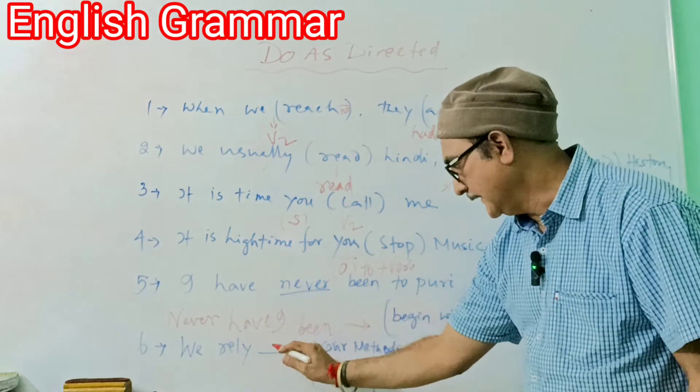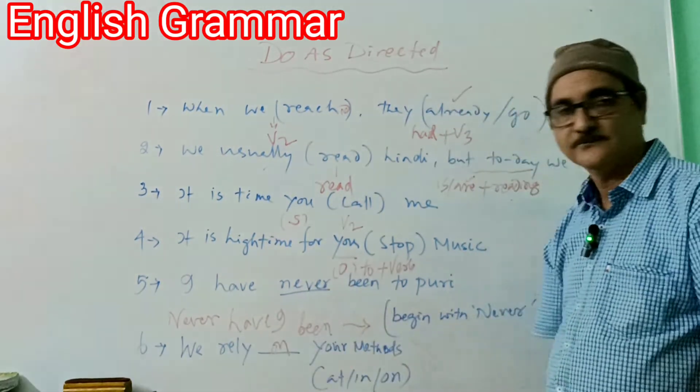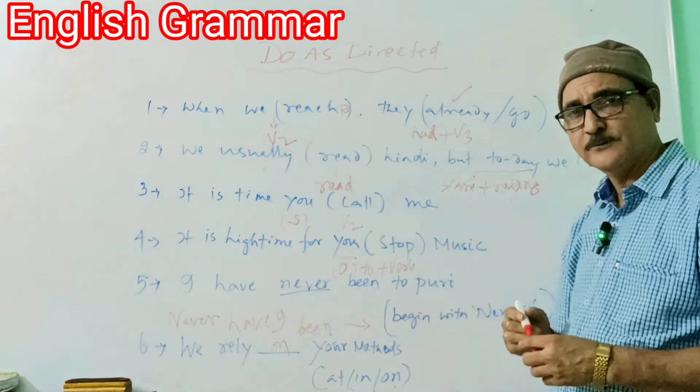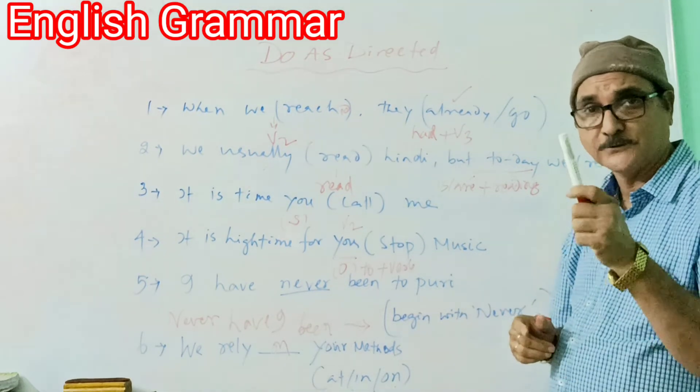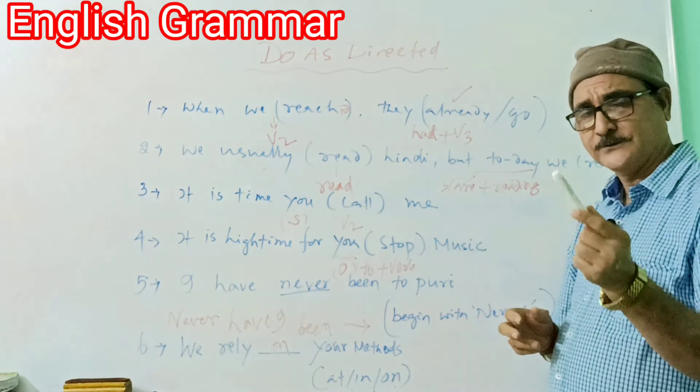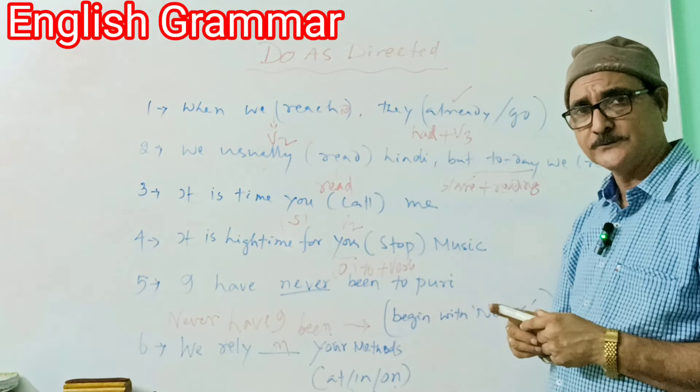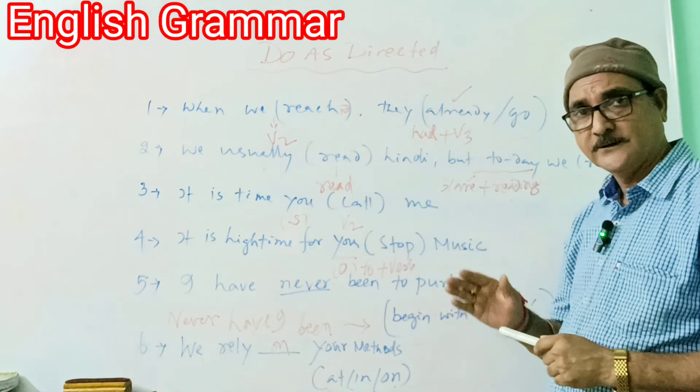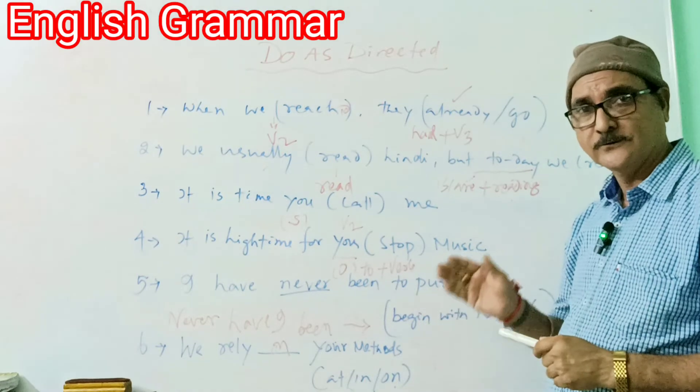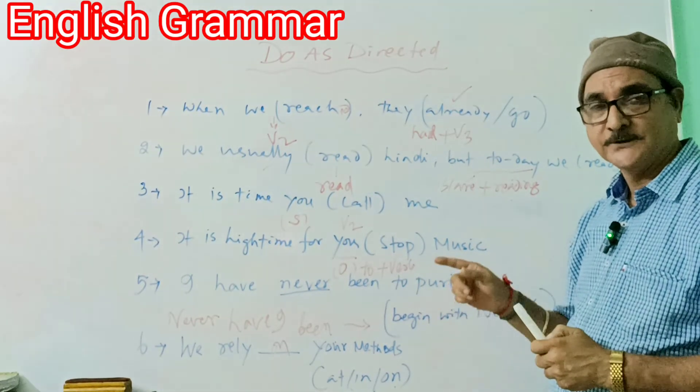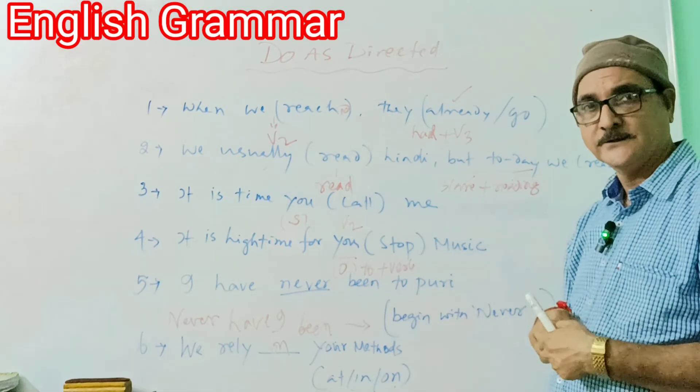Next, we relay - the preposition should be 'on.' Rely on. Alternative English students, you can go to English 4 book, page 82-83. There you can observe after which verbs 'at,' after which verbs 'in,' 'on,' or 'of' forms are used. Depend on, rely on.